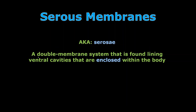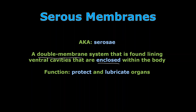Serous membranes — also called serosae — are the most complicated of the four, so you see a lot of test questions on this. It is a double membrane system that lines ventral cavities that are enclosed. If the mucosae line the openings of the body, the serosae line the enclosed cavities within the body. It's for protection and lubrication — let's draw this out so we can see what it looks like.